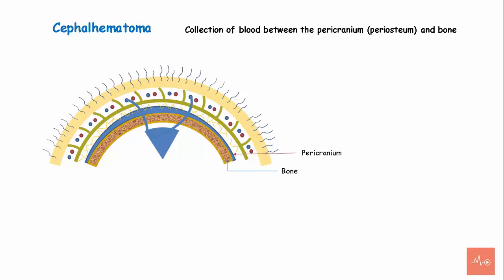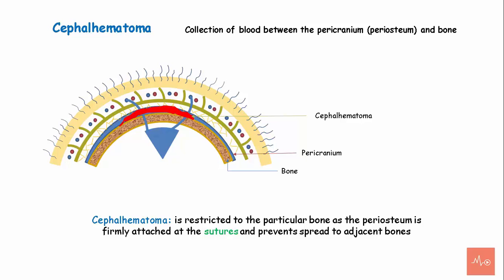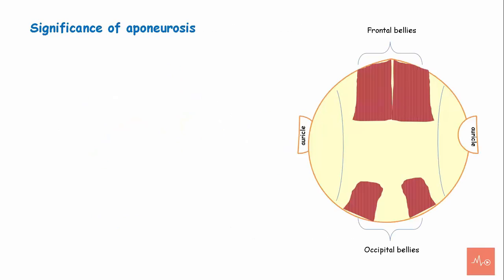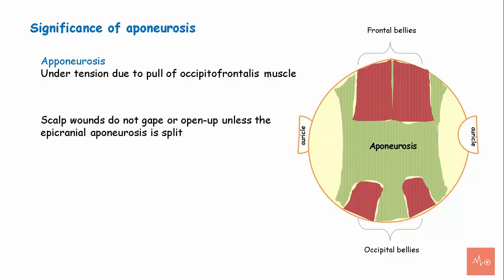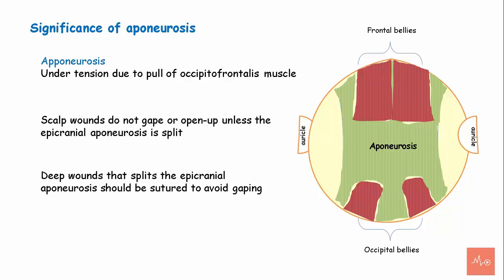Cephalhematoma refers to the collection of blood between the pericranium and the bone. It is restricted to the particular bone as the periosteum is firmly attached at the sutures, preventing spread to adjacent bones. Regarding the significance of the aponeurosis: it remains under tension due to the pull of the occipitofrontalis muscle, which is why scalp wounds do not gape unless the epicranial aponeurosis is split. Deep wounds that split the aponeurosis should be sutured to avoid gaping.